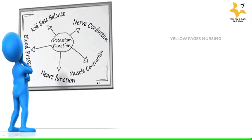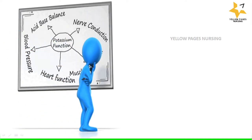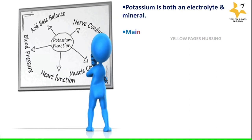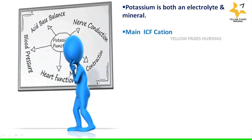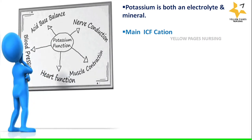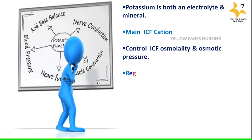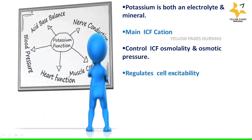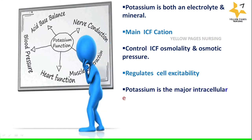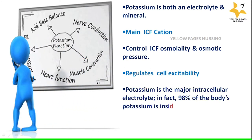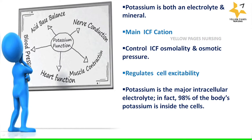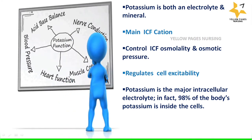Potassium is both an electrolyte and a mineral. It is the main intracellular fluid cation. It controls ICF osmolality and osmotic pressure, and also regulates cell excitability. It is a major intracellular electrolyte — in fact, 98% of the body's potassium is inside the cell, and only the remaining 2% is found in the extracellular fluid.